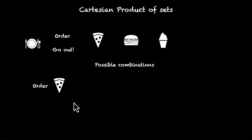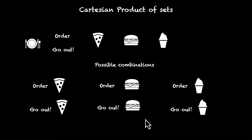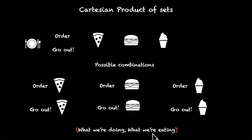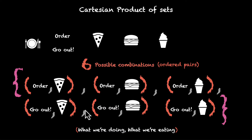This is what we have. We can order a pizza, we can order a burger, we can order an ice cream, or we can go out and have a pizza, we can go out and have a burger, or we can go out and have an ice cream. Now each of them can be written as an ordered pair — the first element tells us what we are doing and the second one tells us what we are eating. So we have these six ordered pairs, six possible combinations. Now when we put all six of them inside a set, these six become elements of a set. This powerful set is called the Cartesian product.